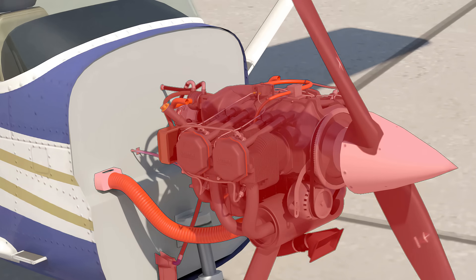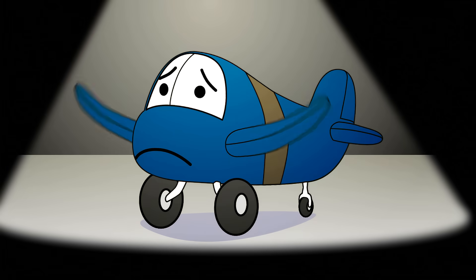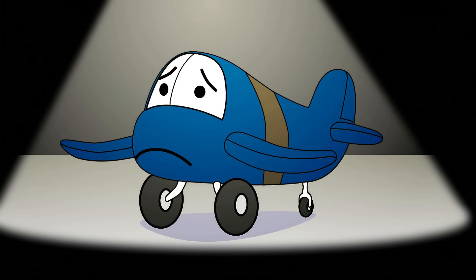The power plant of an airplane, like an engine of a car, is one of the most important components, because without it, there is no way to get the plane off the ground.